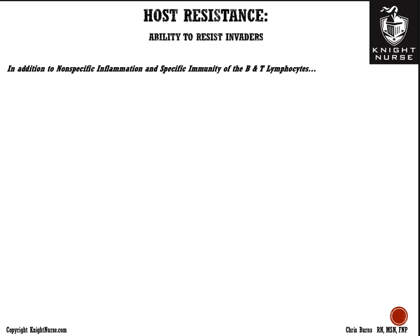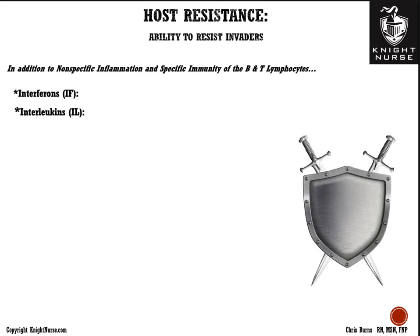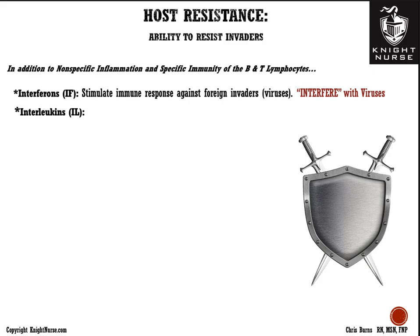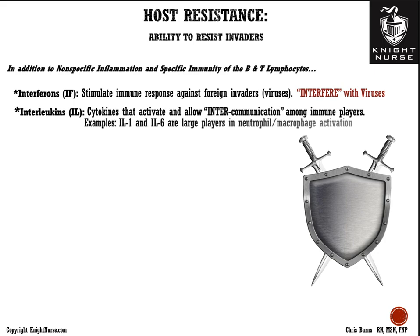Host resistance to infection involves non-specific inflammation, specific immunity from B and T lymphocytes, and chemokines. Interferons stimulate the immune response against foreign invaders — specifically viruses — essentially interfering with viral replication. Interleukins are cytokines that activate and allow intercommunication among immune cells. Key interleukins IL-1 and IL-6 activate neutrophils and macrophages to stir up the immune system. Many of these are produced by the T helper cell (CD4), though other cells can produce them as well.